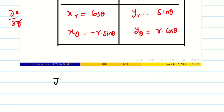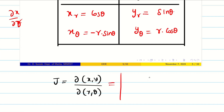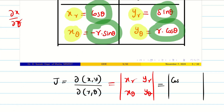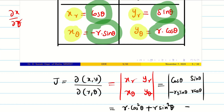Since x and y are functions of r and θ, we write ∂(x,y)/∂(r,θ). Copying from the table: the determinant is |x_r  x_θ; y_r  y_θ| = |cos θ  −r sin θ; sin θ  r cos θ|. Expanding: r cos²θ − (−r sin²θ) = r(cos²θ + sin²θ) = r. Therefore the Jacobian J = r.